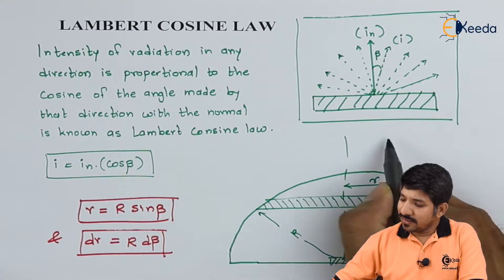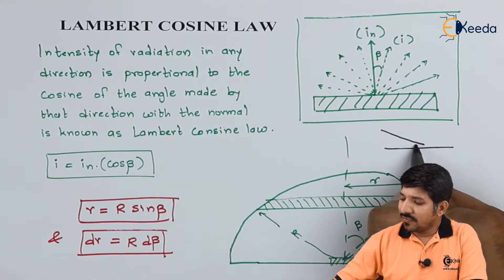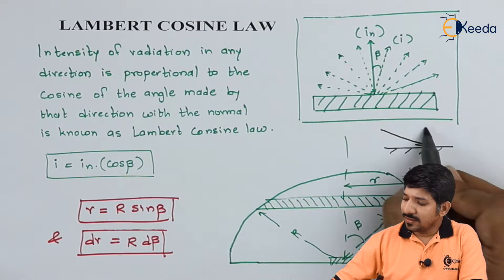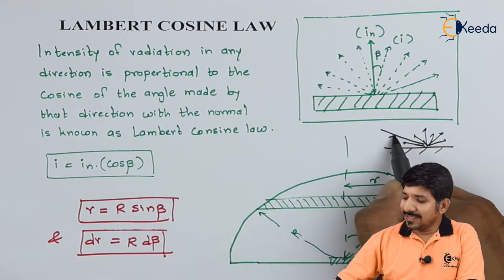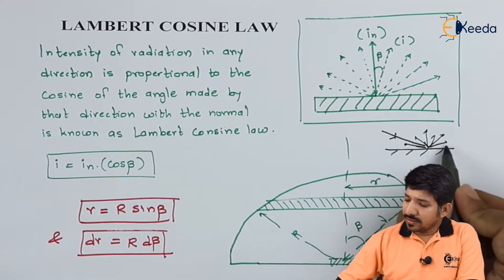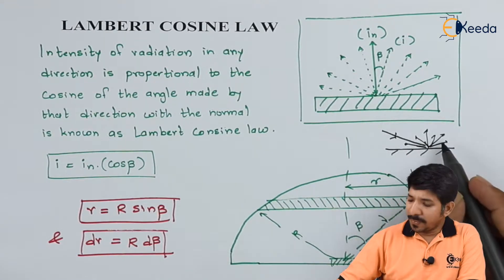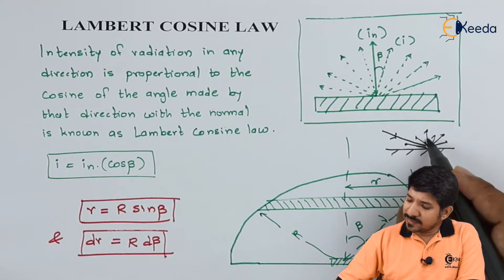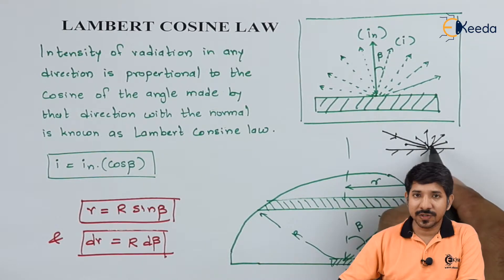Most of the bodies fall under the diffuse category, meaning once the radiation comes onto the body or the surface, the energy will get diffused in all the directions. But the intensity by which the energy gets diffused from the surface may not be the same in all directions. It is assumed that it is maximum for the direction normal to the given surface.